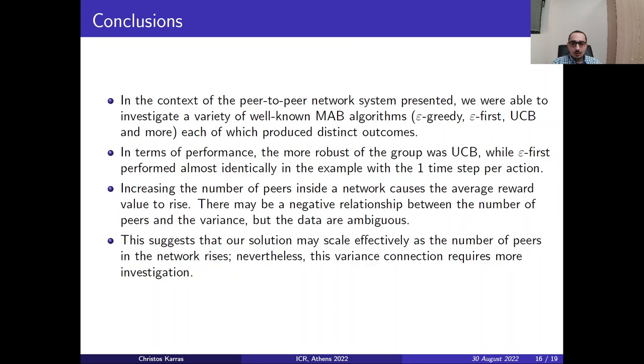In conclusion, in the context of this peer-to-peer network system presented here, we were able to investigate a variety of well-known MAB algorithms. Namely the epsilon greedy, epsilon first, UCB and many more. Each of which produced distinct outcomes. In terms of performance, the more robust of the group was UCB, while the ε-first performed almost identically in the example with the one time step per action. This is the first example we saw. Increasing the number of peers inside the network causes the average reward value to rise, as it can be anticipated.